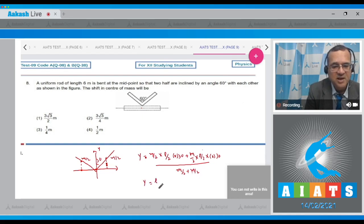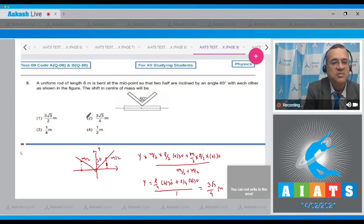So m cancels out from here. So y coordinate will be L/4 cos 30° plus L/4 cos 30° divided by 1. Fill out the value of cos 30° which equals √3/2. So this value comes to be 3√3/4. So no change in x coordinate, only in y coordinate. Your answer will be second option 3√3/4 meter.